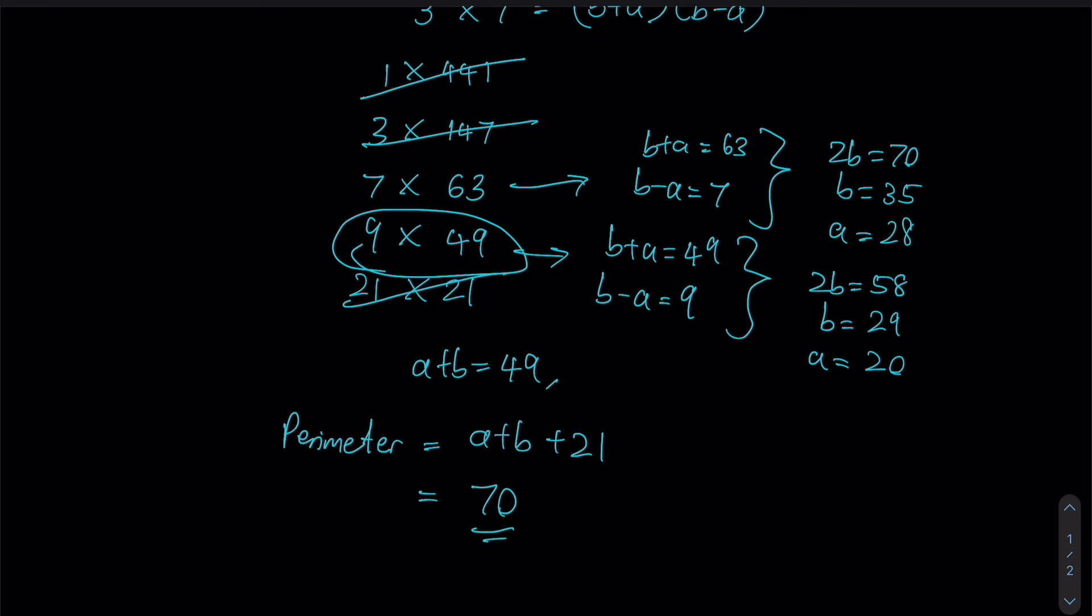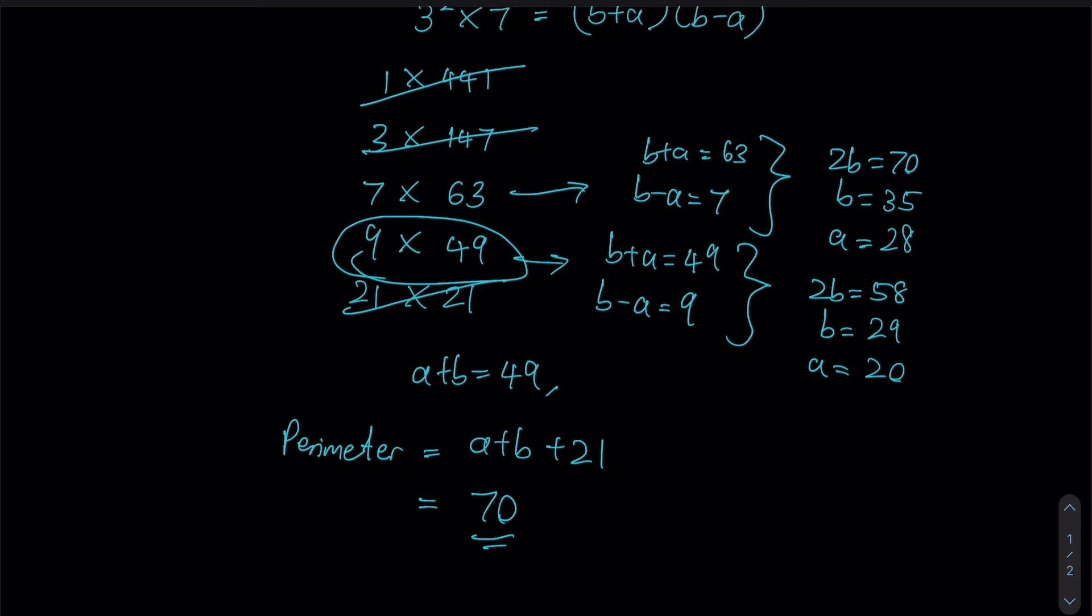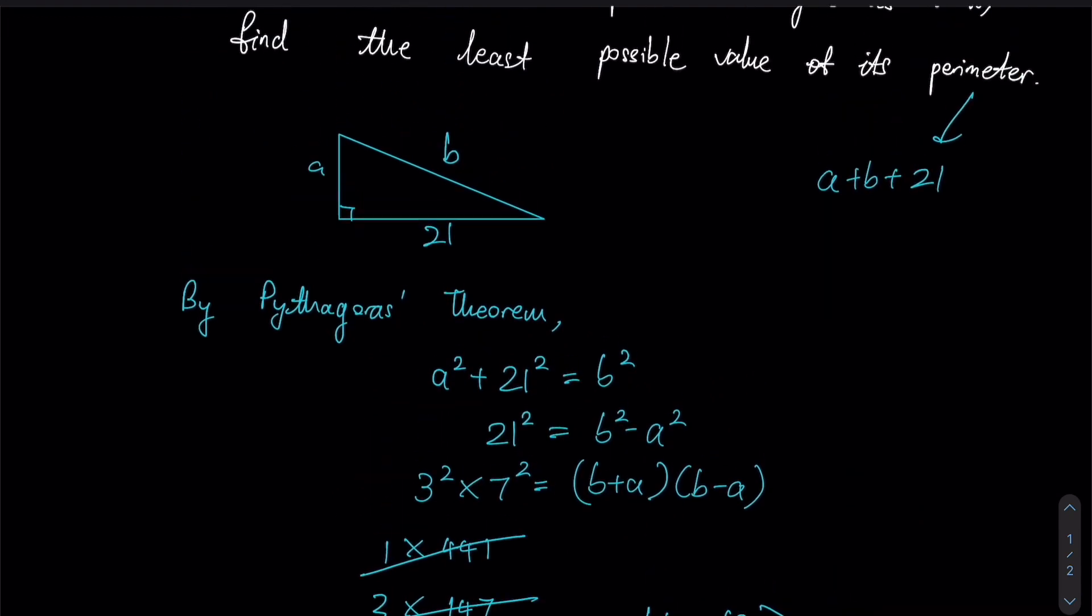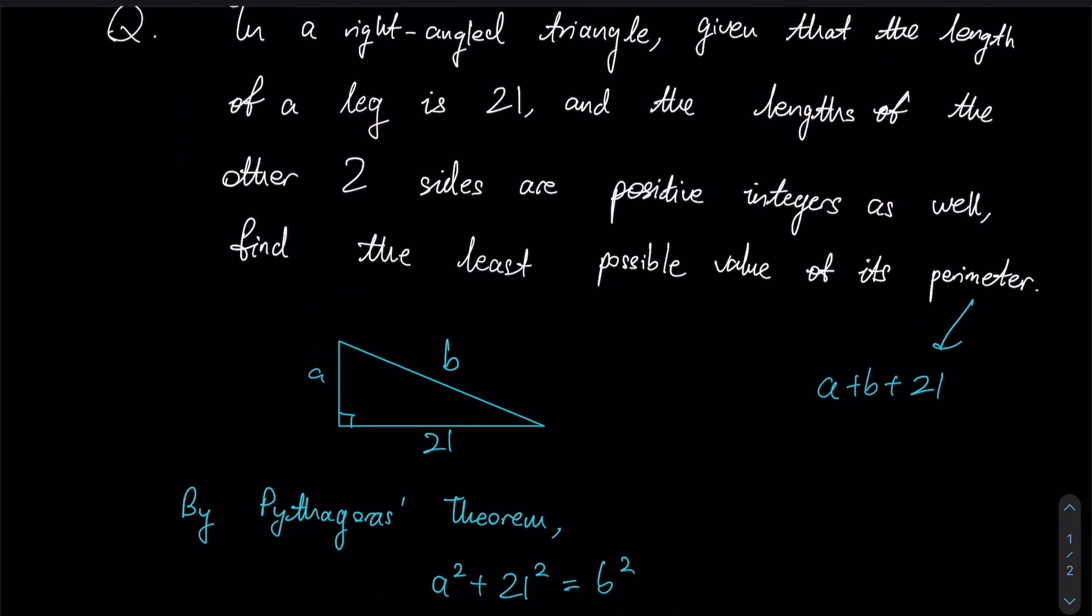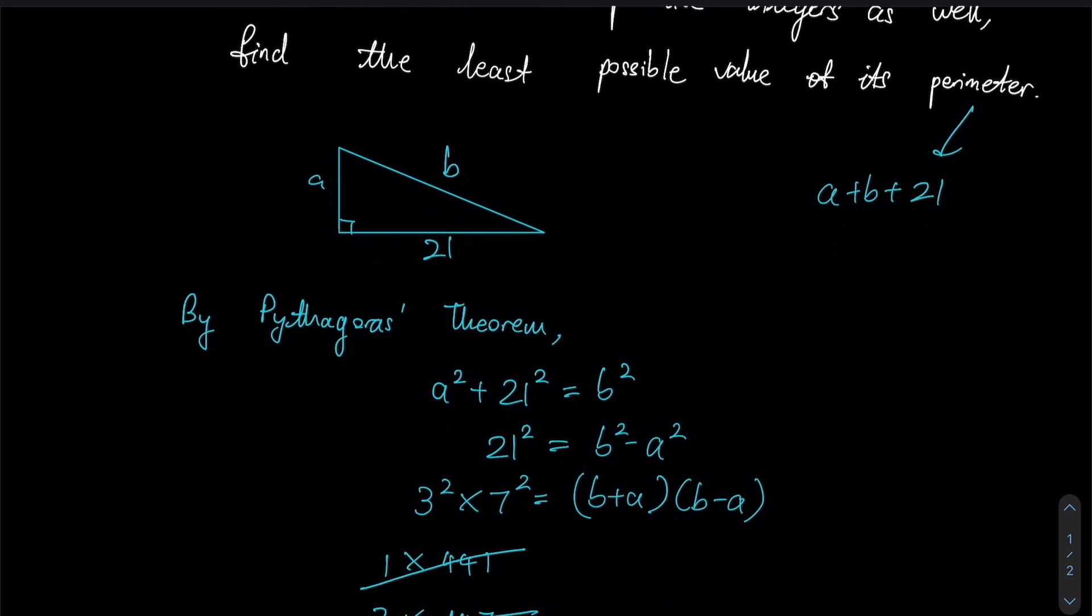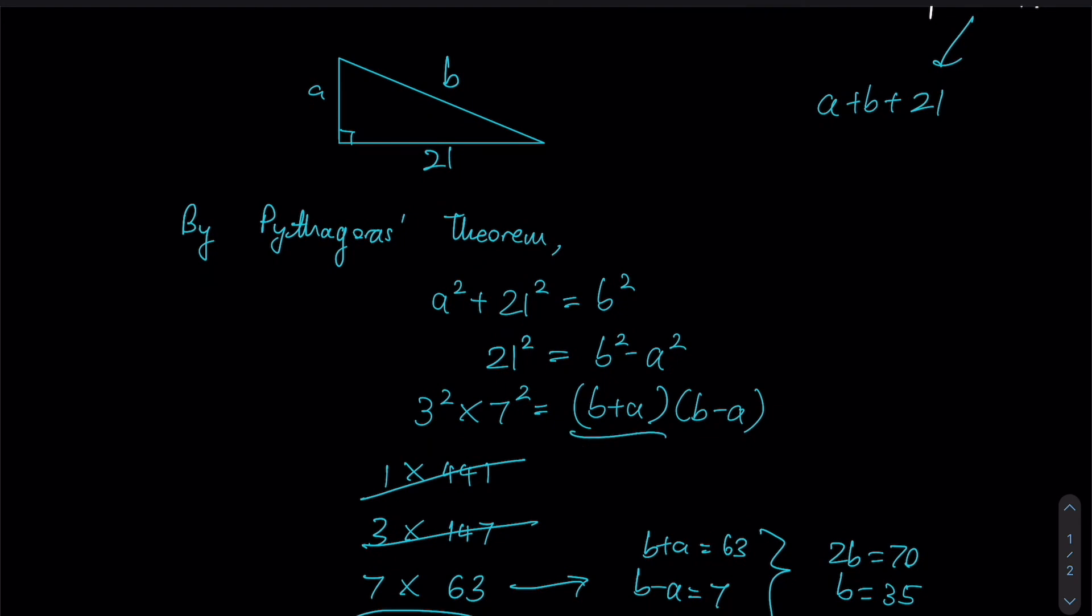So just to do a brief recap, all we need to recognize is that since we have a right angle triangle, the first thing that should come to mind is the application of Pythagorean theorem. After which, crafting this equation here should lead us to realize that we can obtain a difference of squares, which we can then factorize into b + a and b - a.